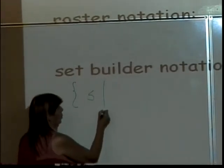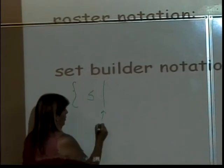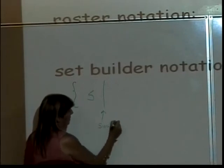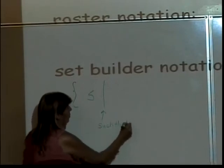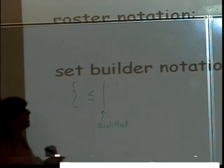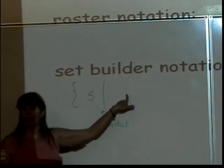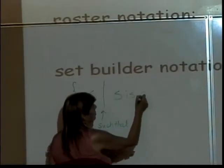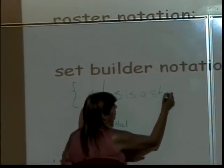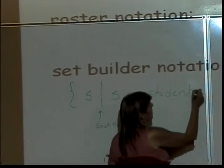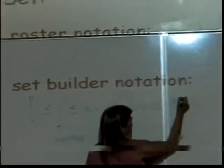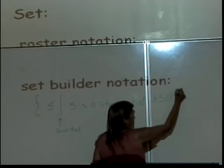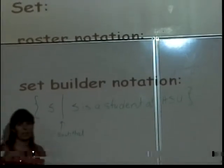And this is shorthand. Do you like this shorthand? Such that. So this is the set of S such that. And then I would describe my set so it's clear what's in it and what's not. In this case, S is a student at ASU. And then I would close my set with my set brace.